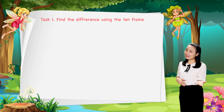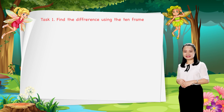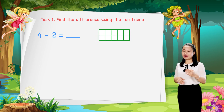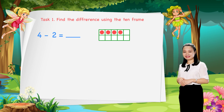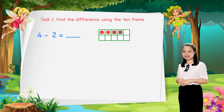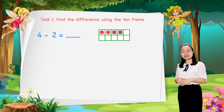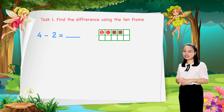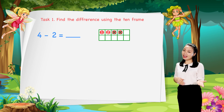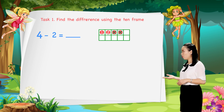Now, let's find the answers together. First, find 4 minus 2. We draw 4 dots in the 10 frame. Then, cross out 2 dots. Then, count the number of dots left to find the difference. Let's count: 1, 2. So, 2 dots left. Therefore, 4 minus 2 equals 2.